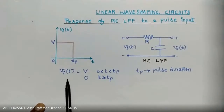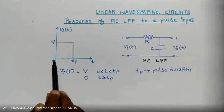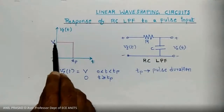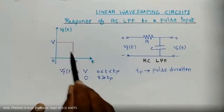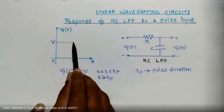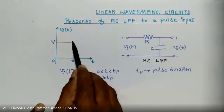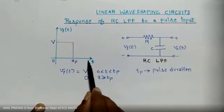Until t is less than 0, the input is 0. At t equal to 0, it has suddenly changed from 0 to capital V volts, and it continues to be capital V until a certain point in time. At t equal to tp, it changes back from V volts to 0 volts.